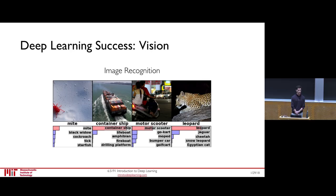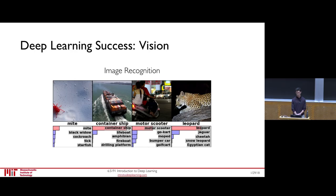In 2012, a competition called ImageNet tasked AI researchers to build a system capable of recognizing objects in images, with millions of examples in the dataset. The winner in 2012 for the first time ever was a deep learning-based system, and it absolutely shattered all other competitors. Today, these deep learning-based systems have actually surpassed human-level accuracy on the ImageNet challenge and can recognize images even better than humans.